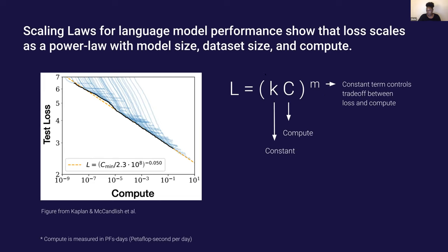This is LFC — the equation that represents this power line. The M term here is the constant term that controls the trade-off between loss and compute. If you see me looking off to my right, I'm looking at my monitor to make sure I'm pointing at the right thing.